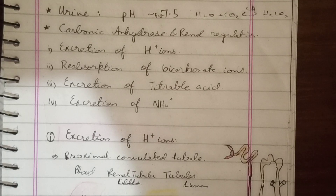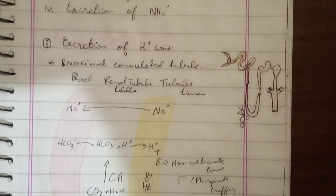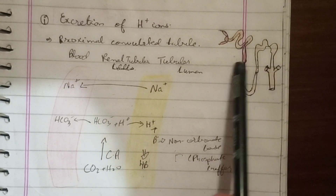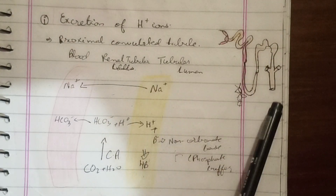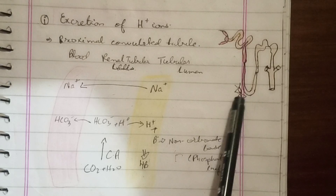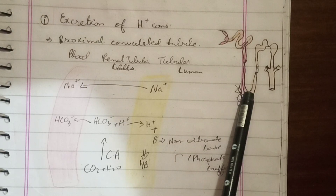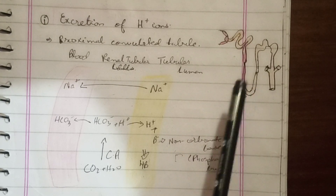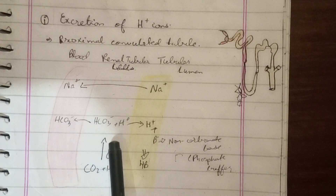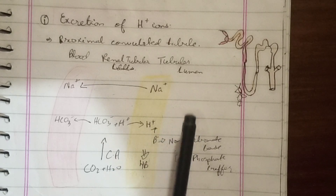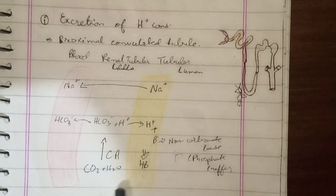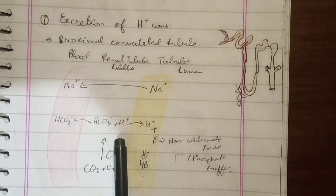Excretion of hydrogen ions occurs in the proximal convoluted tubules. If we magnify it, we have a capillary, renal tubular cells, and the tubular lumen where we have filtrate from filtration. In the renal tubular cells, carbon dioxide and water react — carbonic anhydrase acts to form carbonic acid (H2CO3), which then dissociates into bicarbonate ions and H⁺.